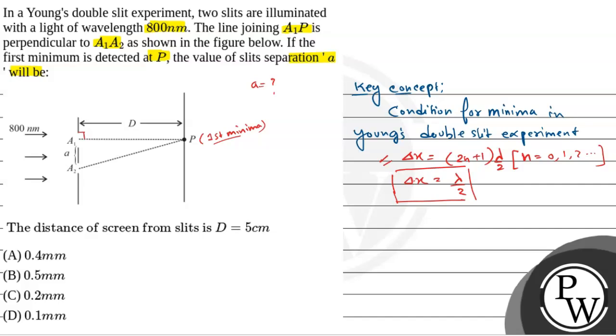Now, we have to find the path difference first. Now, this is 90 degree that means A1P will be the distance between the slit and the screen. So let's say the distance is D, that is given 5 cm. So A1P is D. Now, to find A2P, let's say this is point O.